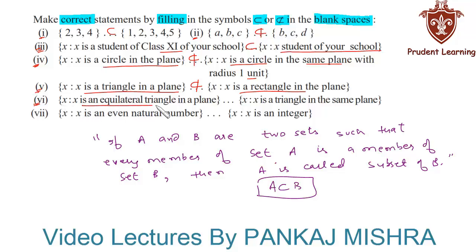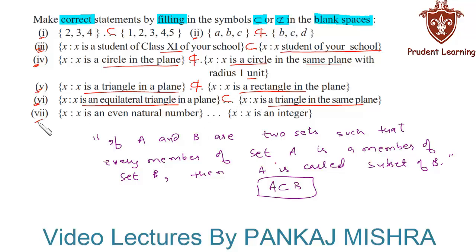In the sixth section, the first set is {x : x is an equilateral triangle in a plane} and the second set is {x : x is a triangle in the same plane}. We know that all equilateral triangles in a particular plane are also members of the set of all triangles in the same plane. Hence, the first set is a subset of the second set.